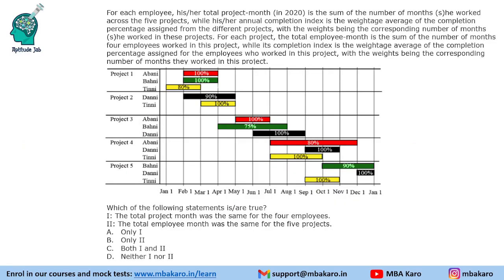The first question asks which statements are true: (1) the total project month was the same for all 4 employees, and (2) the total employee month was the same for all 5 projects. For project months: Abani is 9, B is 2 + 4 + 3 = 9, T is 2 + 2 + 4 + 7 + 2... wait, that totals 9 months, and D is 3 + 3 + 2 + 1 = 9 months. So the first statement is true.